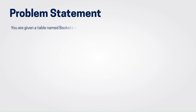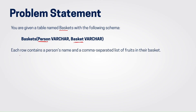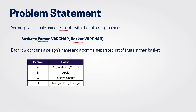So assume that you have been given a table named baskets with the following schema. We have two columns — one is the person and the second one is the basket, and both the data types are varchar. Now, each row contains a person's name and a comma-separated list of fruits in their basket. So here is your input table with two columns: person and the basket.